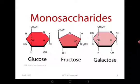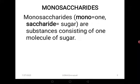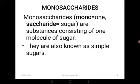Let's start with the monosaccharides. We have some examples: glucose, fructose, and galactose. The word monosaccharide comes from two words — mono, meaning one, and saccharide, meaning sugar. So a monosaccharide is one sugar unit. These are substances consisting of one molecule and they are known as simple sugars because of their structure.